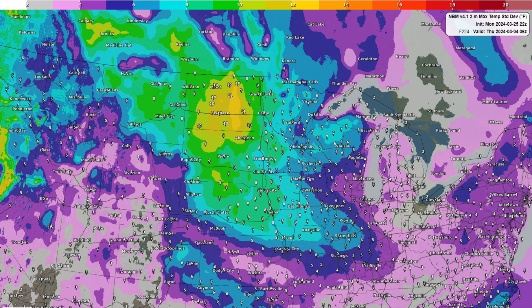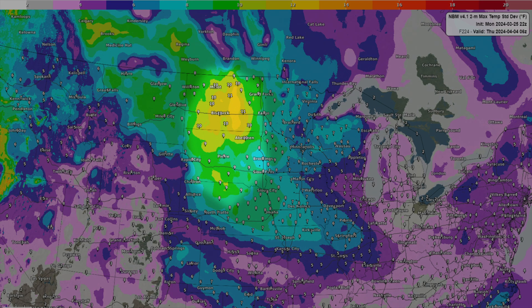Let's look at this example from the Whole Story Uncertainty and Probability viewer. In this example, the models going into the national blend of models, mostly ensembles at this time range, vary on what the 2 meter temperature will be for the forecast at hour 224, or valid Thursday, April 4th of 2024.